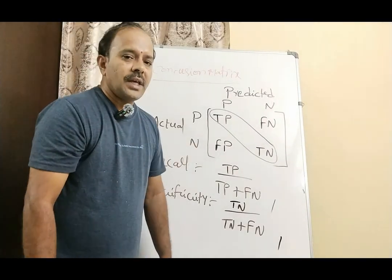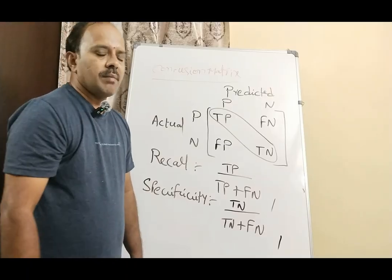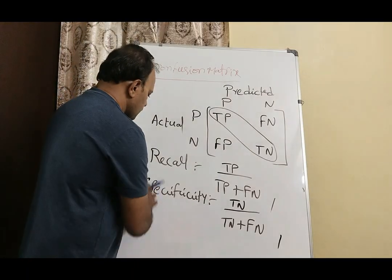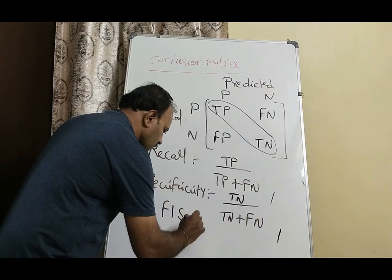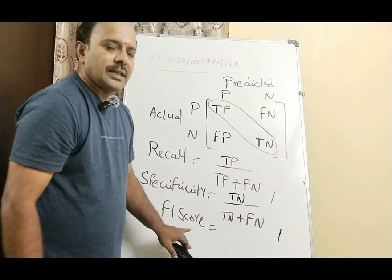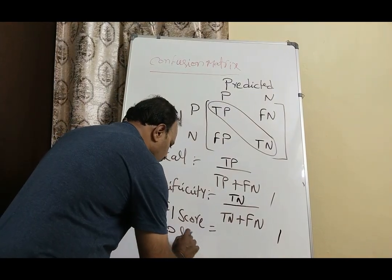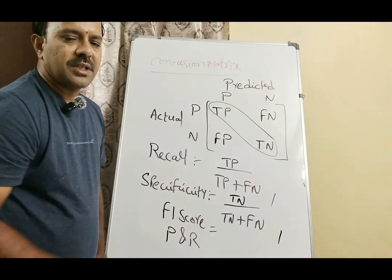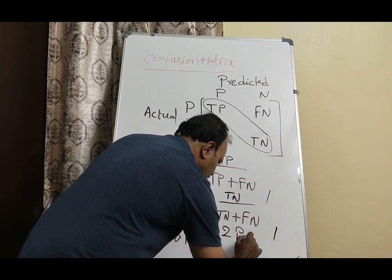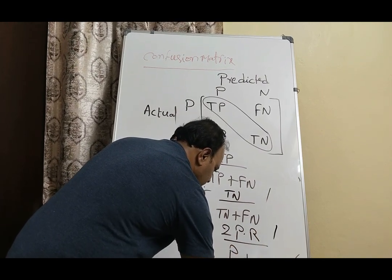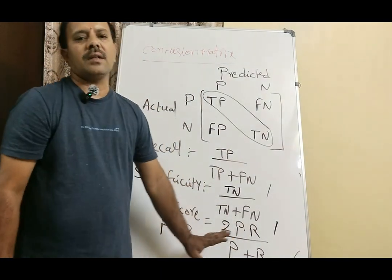One more useful parameter when building any ML model is the F1 score. The F1 score represents the harmonic mean of precision and recall. Its expression is: 2 × (precision × recall) / (precision + recall).